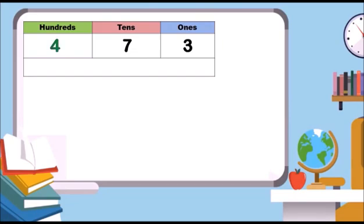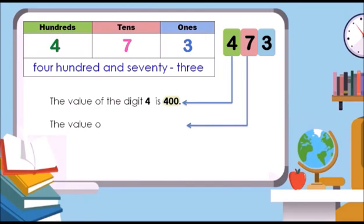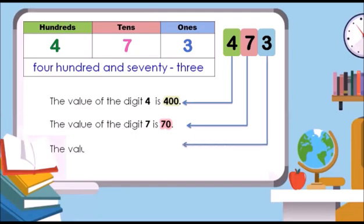We have four hundreds, seven tens, three ones. Four hundreds, seven tens, and three ones is equal to four hundred and seventy-three. This is the number word for four hundred and seventy-three. The value of the digit 4 is 400. The value of the digit 7 is 70. The value of the digit 3 is 3.